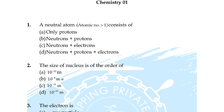Question number 25: mean square velocity of an ideal gas at constant pressure varies with density d as — option A: d², B: d, C: √d, option D: 1/√d. Correct answer is option D: 1/√d.